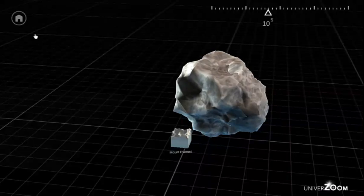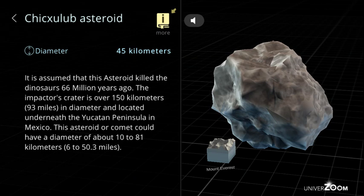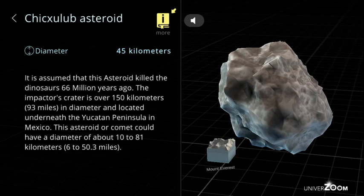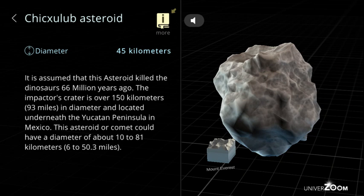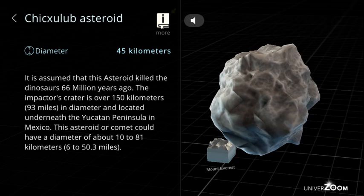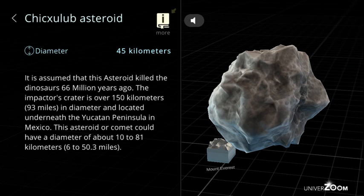Chicxulub asteroid, diameter: 45 kilometers. It is assumed that this asteroid killed the dinosaurs 66 million years ago. The impactor's crater is over 150 kilometers, 93 miles in diameter and located underneath the Yucatan Peninsula in Mexico. This asteroid or comet could have a diameter of about 10 to 81 kilometers, 6 to 50.3 miles.